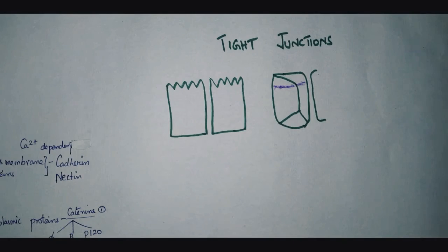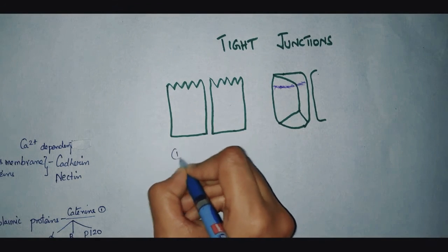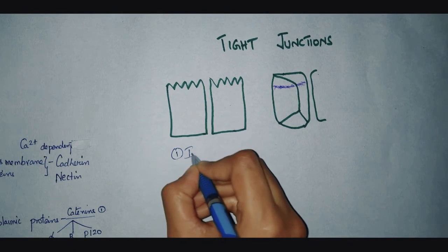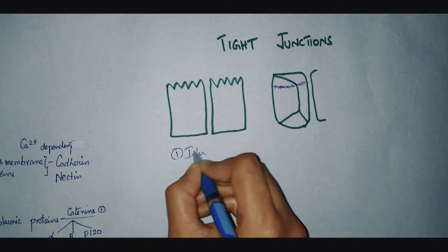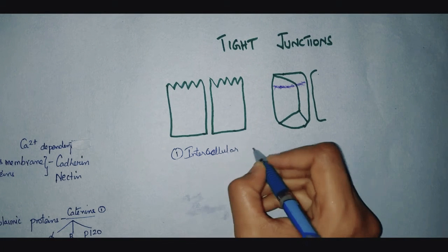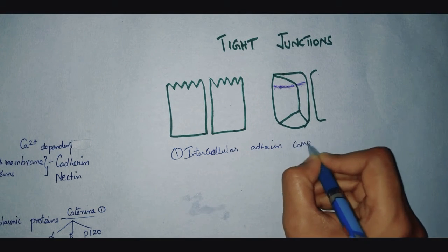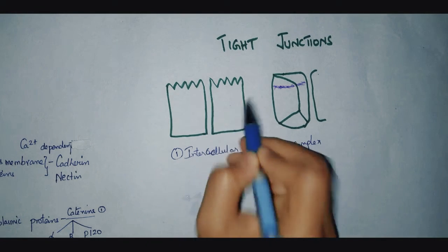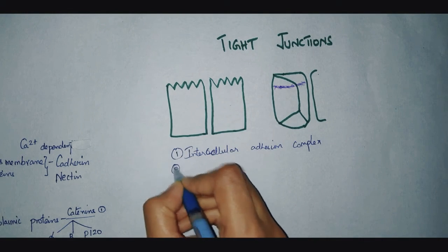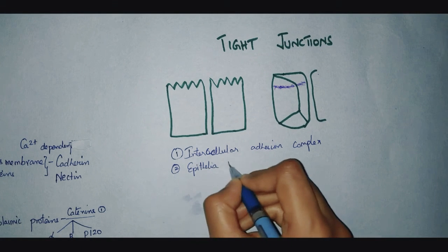In this video we shall see about the tight junction in detail. We can use certain descriptions to describe the tight junction. First, it is an intercellular adhesion complex, meaning it is present between two cells. They are located in the epithelia and endothelia tissues.